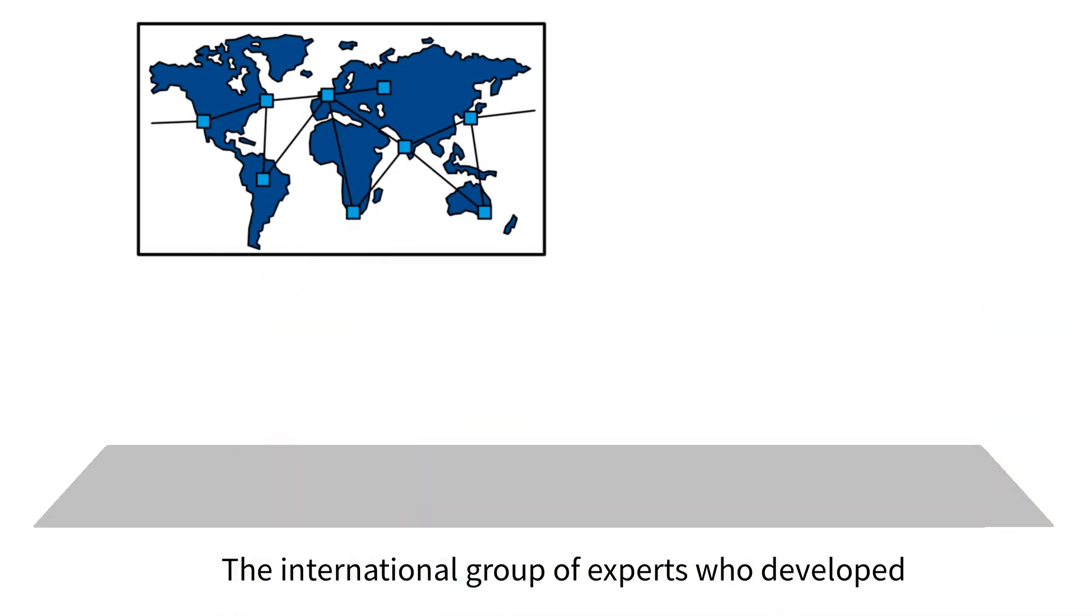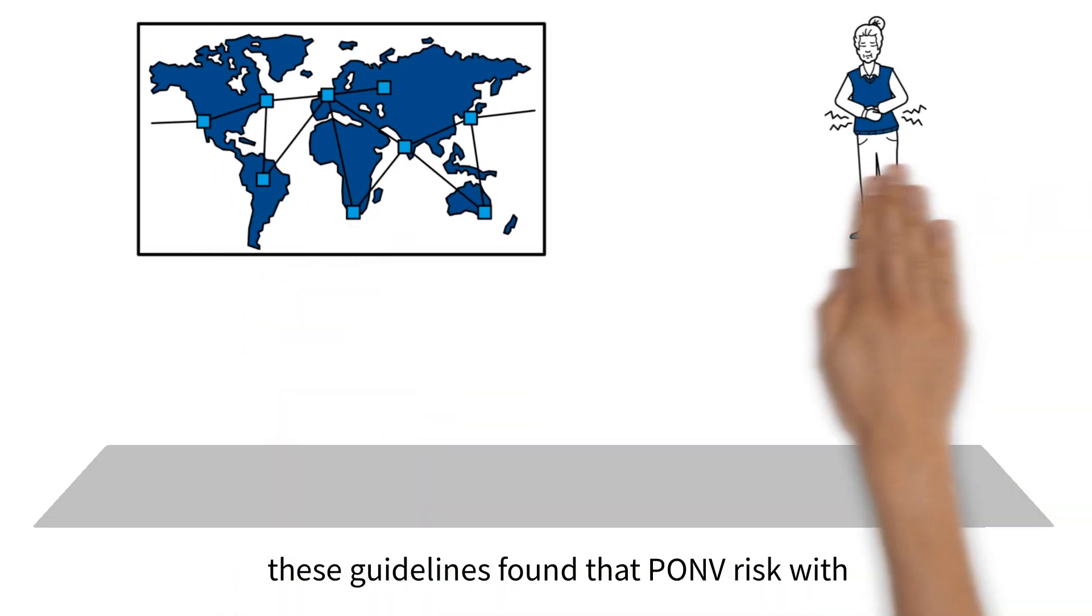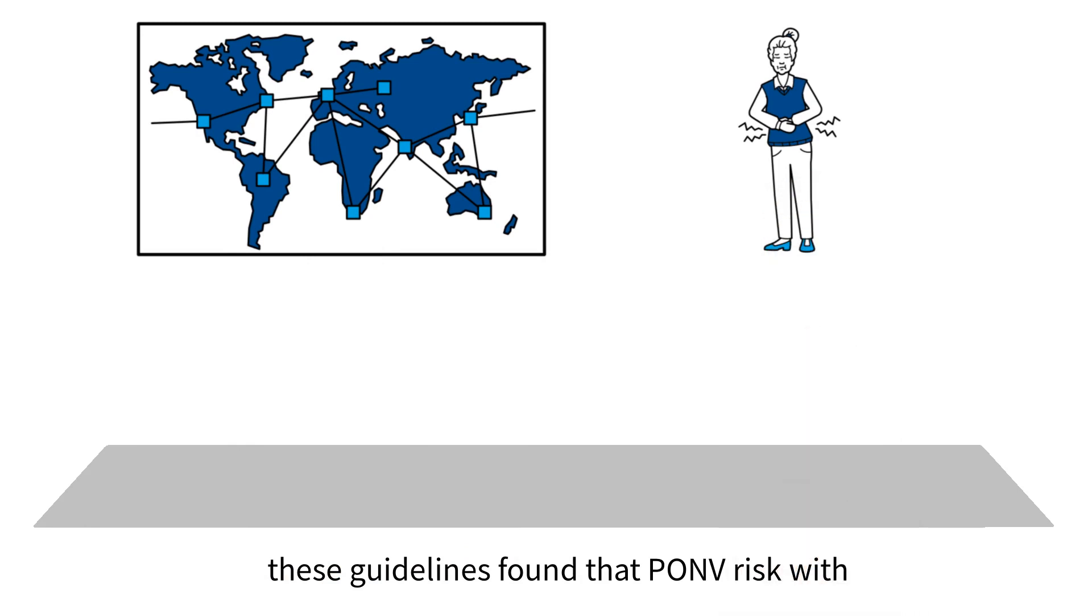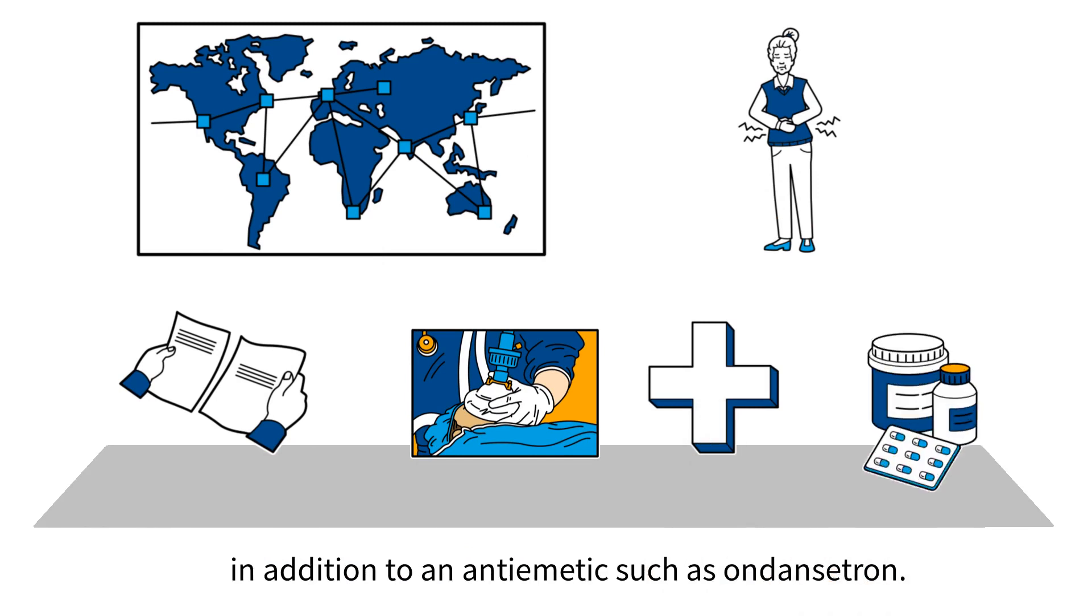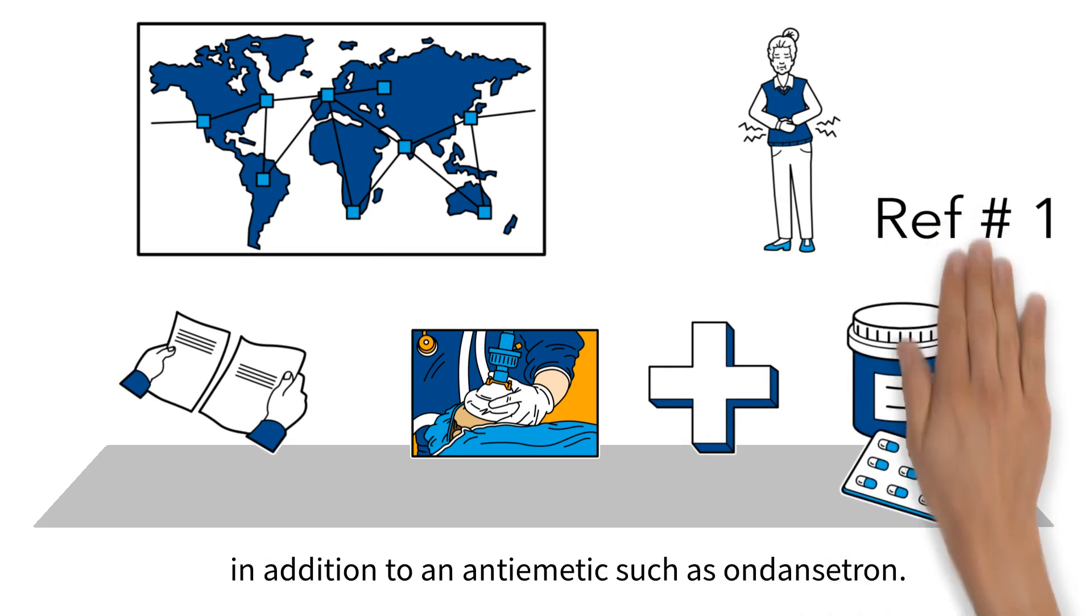The international group of experts who developed these guidelines found that PONV risk with TIVA is comparable to using a volatile agent in addition to an antiemetic such as Ondansetron.